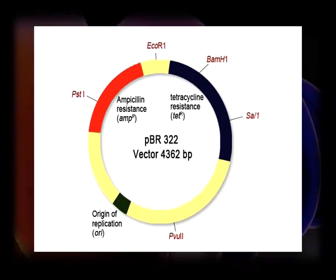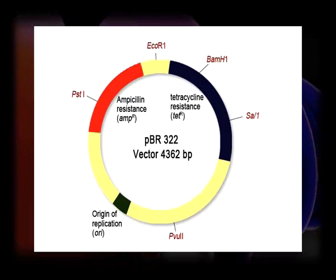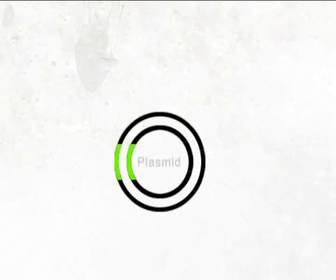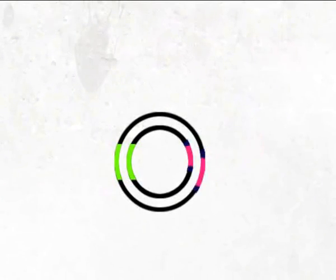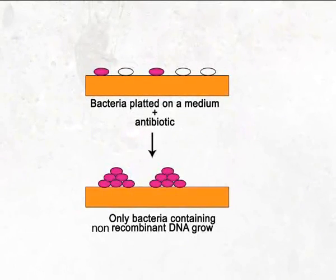pBR322 has two selectable marker genes: an ampicillin resistance gene and a tetracycline resistance gene. Several restriction sites are present within the antibiotic resistance genes — for example, BamHI, SalI, PstI, PvuI, etc. If a gene of interest is inserted within the BamHI or SalI site, it will inactivate the tetracycline resistance gene — this is called insertional inactivation. The host cell carrying such a recombinant plasmid cannot grow in the presence of tetracycline. In this way, bacterial cells carrying recombinant plasmids are selected by their inability to grow on tetracycline medium. Similarly, insertion of a foreign gene within the ampicillin resistance gene will inactivate it and recombinants are selected in the same way.